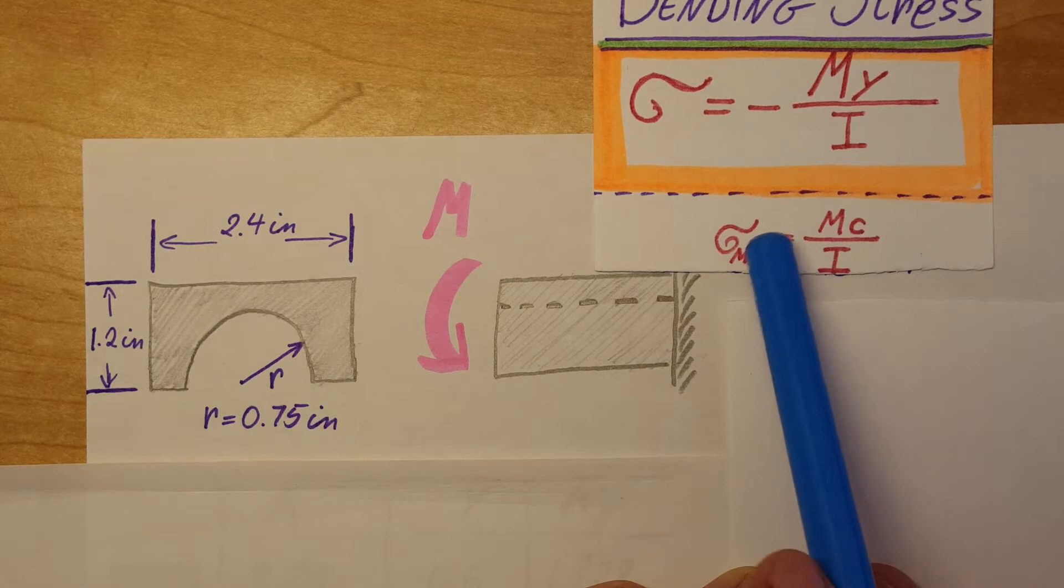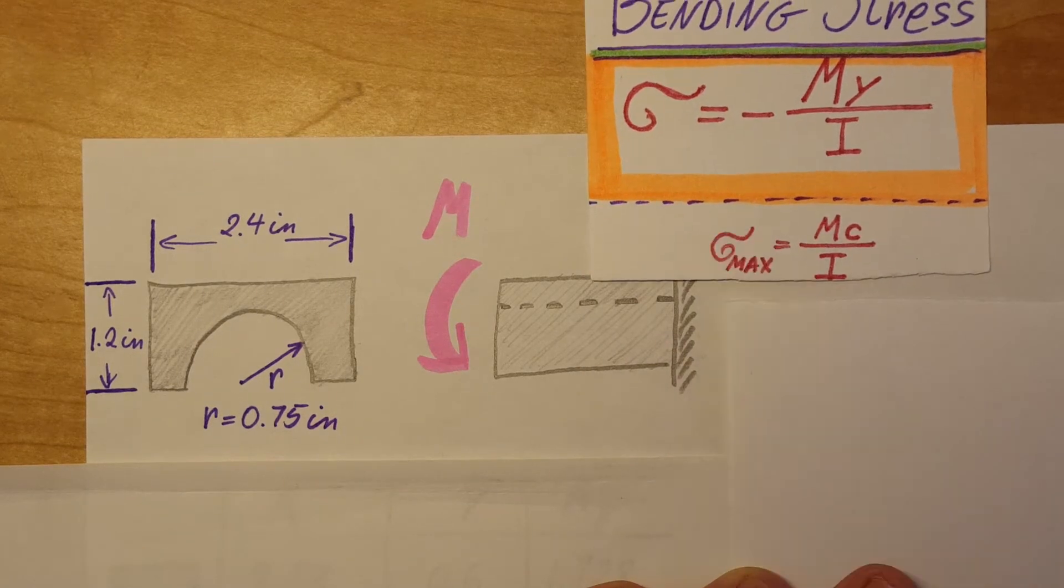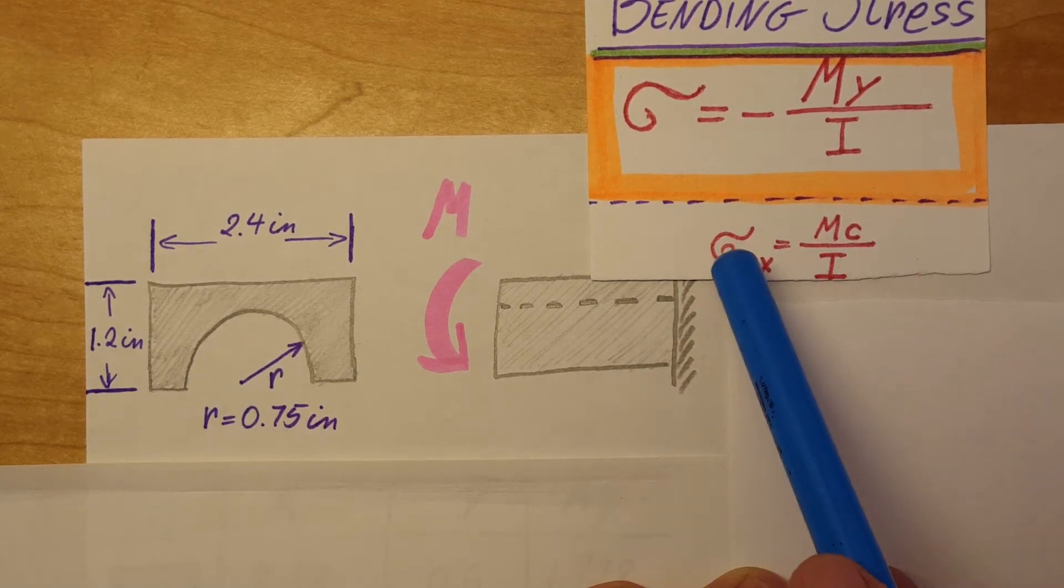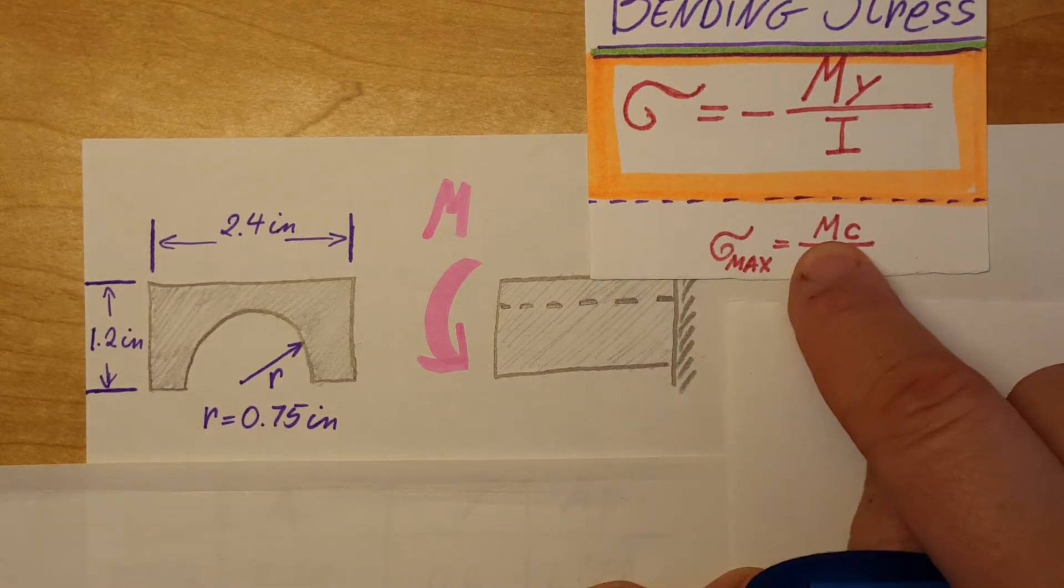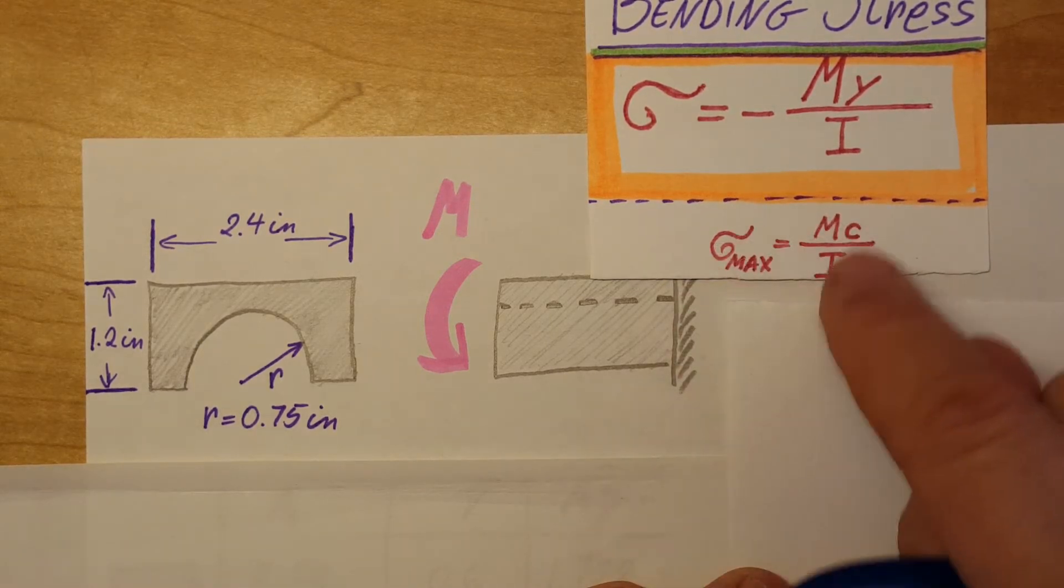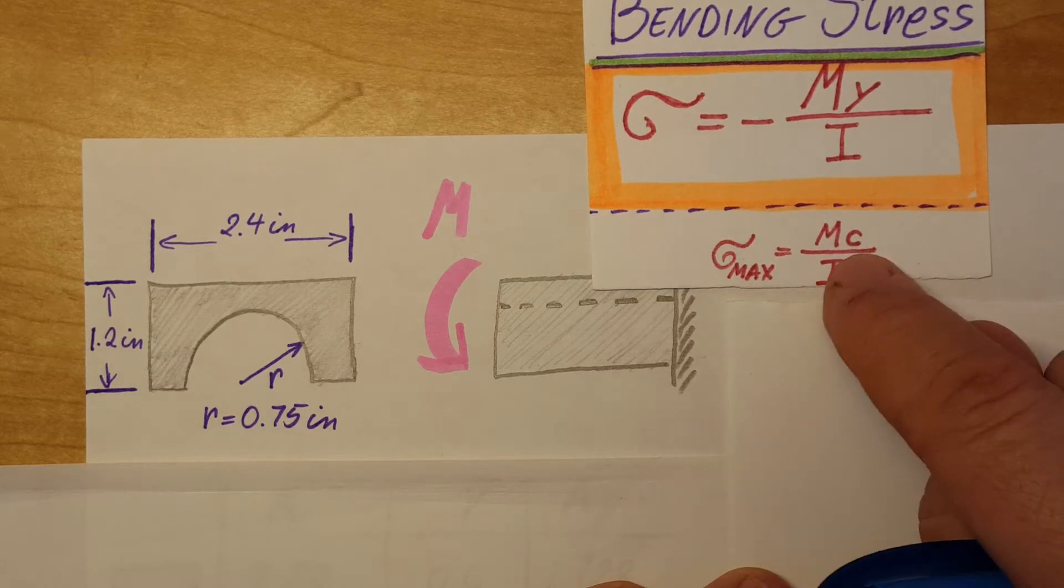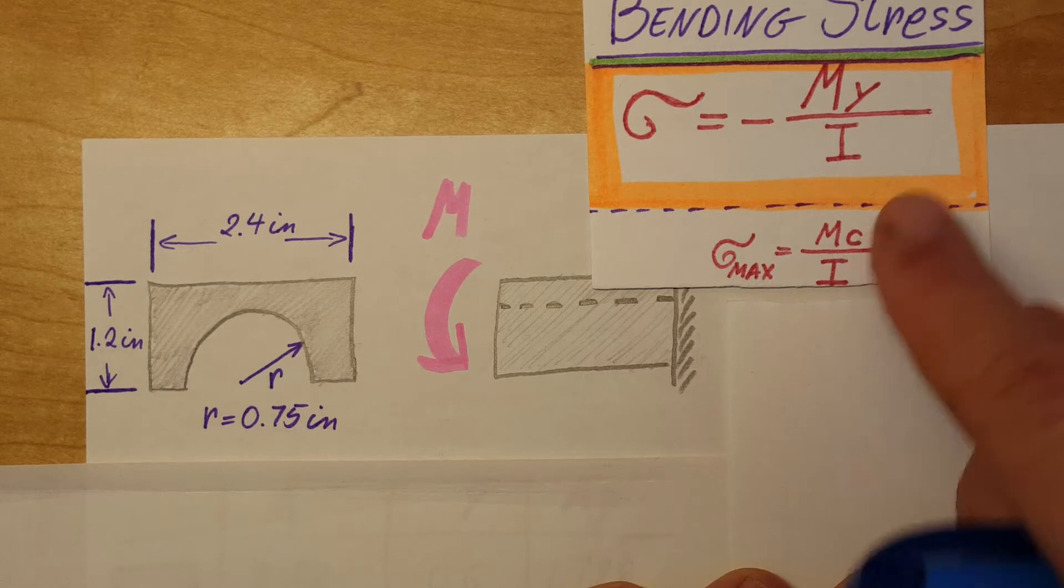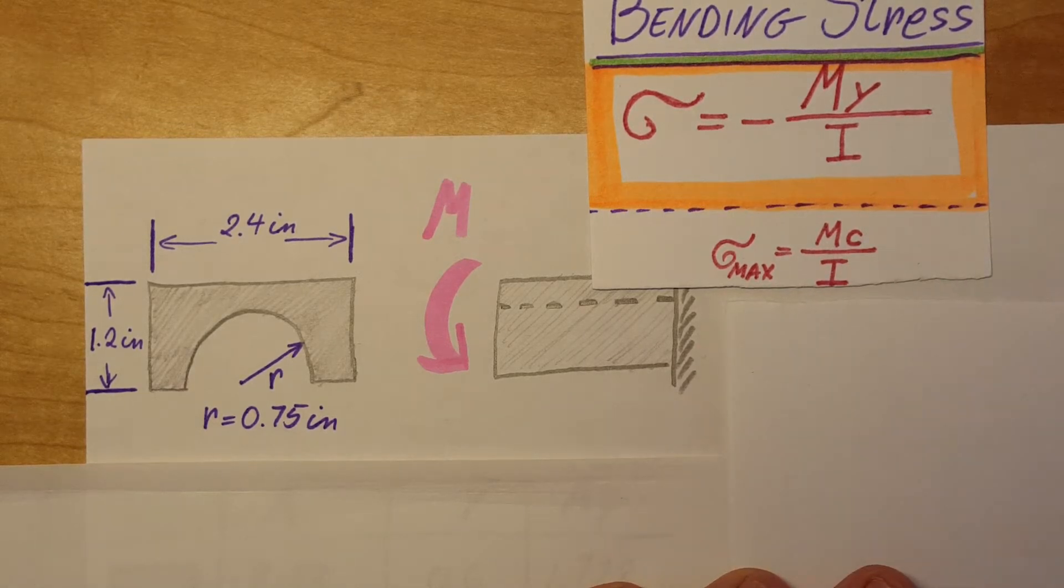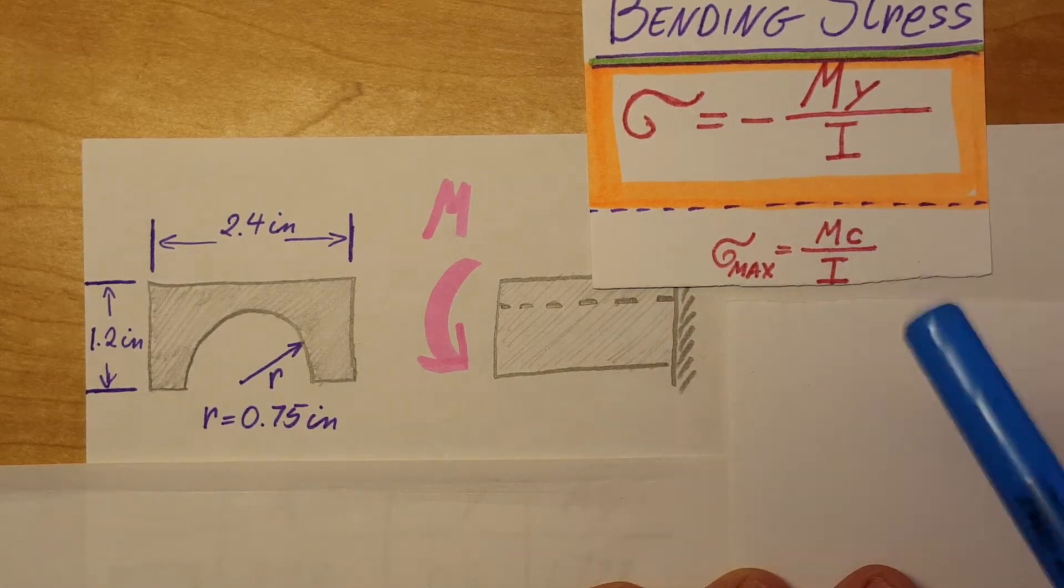We know the stress in tension and compression, so we'll have two answers. We need to find M, so we're going to solve this formula for M. The C we do not know at this point, and I we do not know, so these are the things we need to calculate.